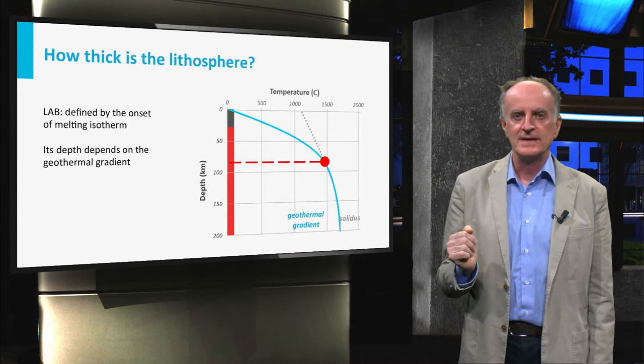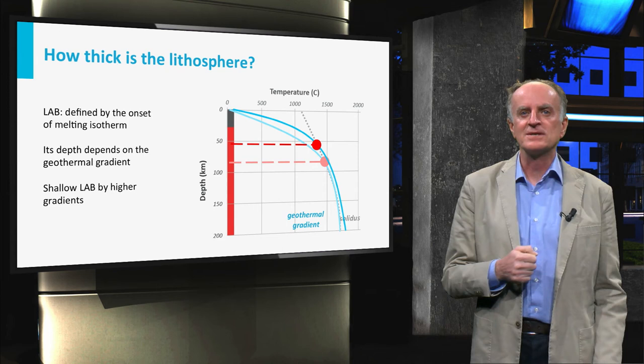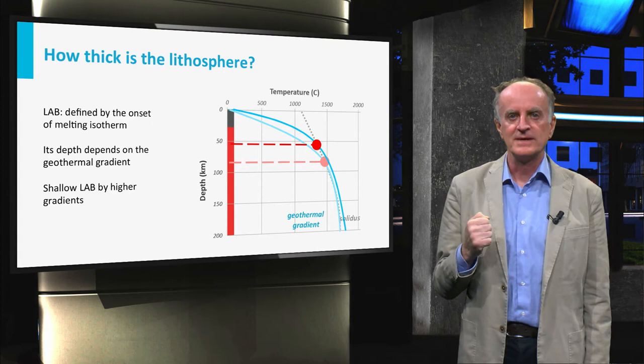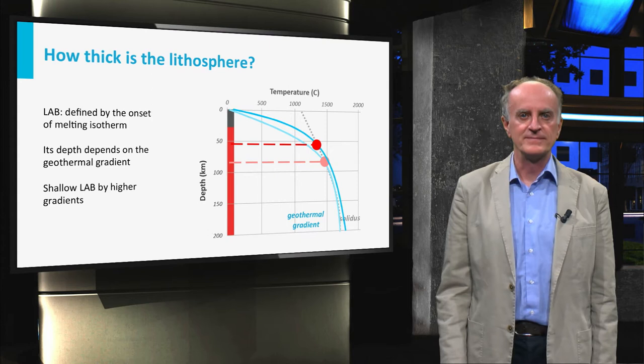In domains where the geothermal gradient is very high, the 1300 degrees isotherm will be shallower and the lithosphere thinner. In regions where geothermal gradients are low, the lithosphere will be thick.